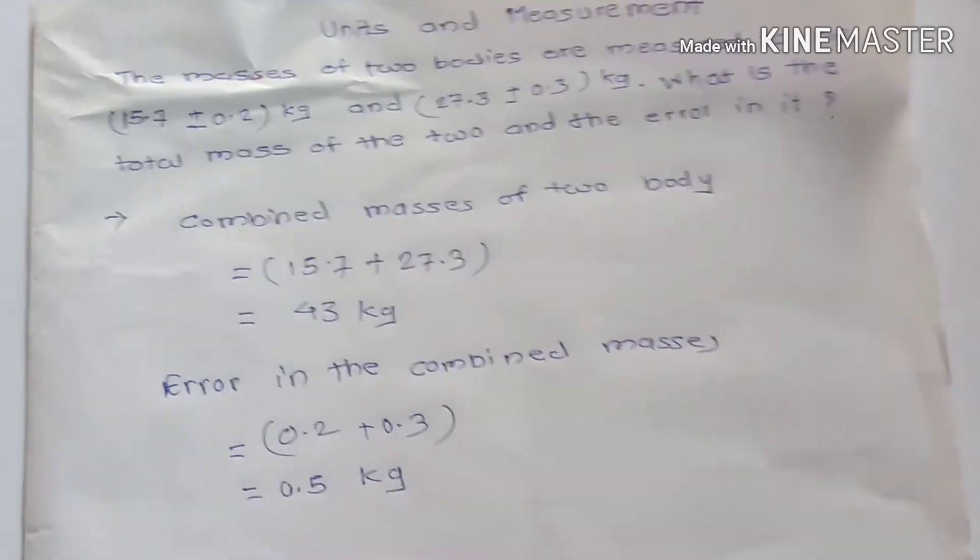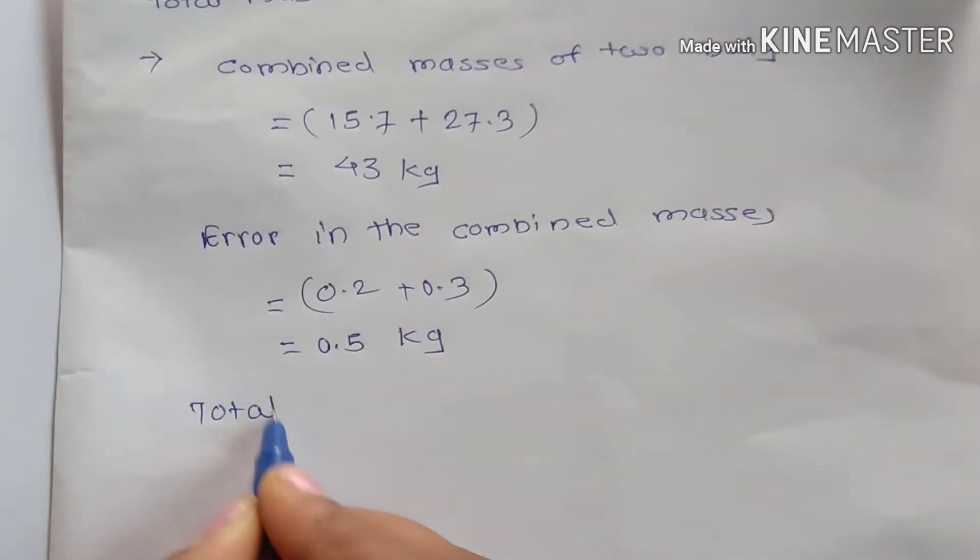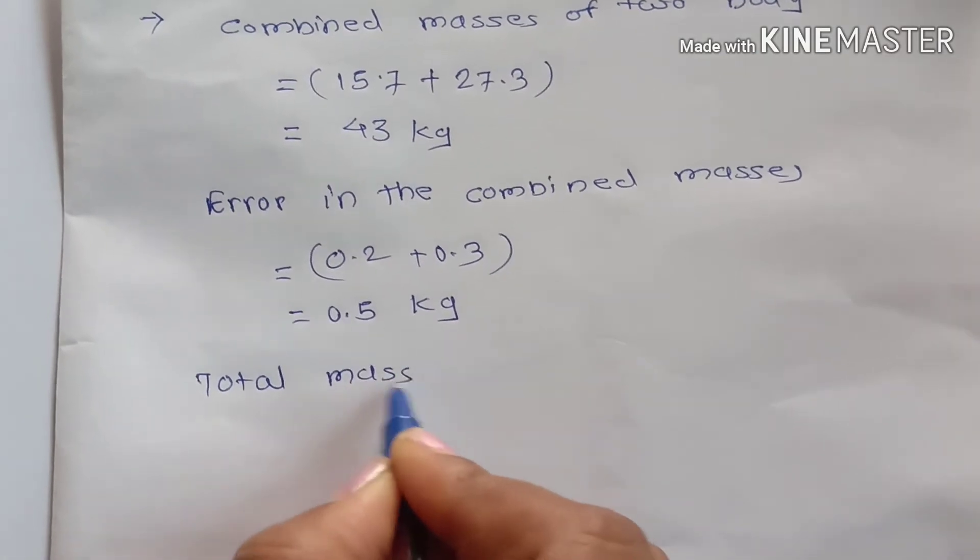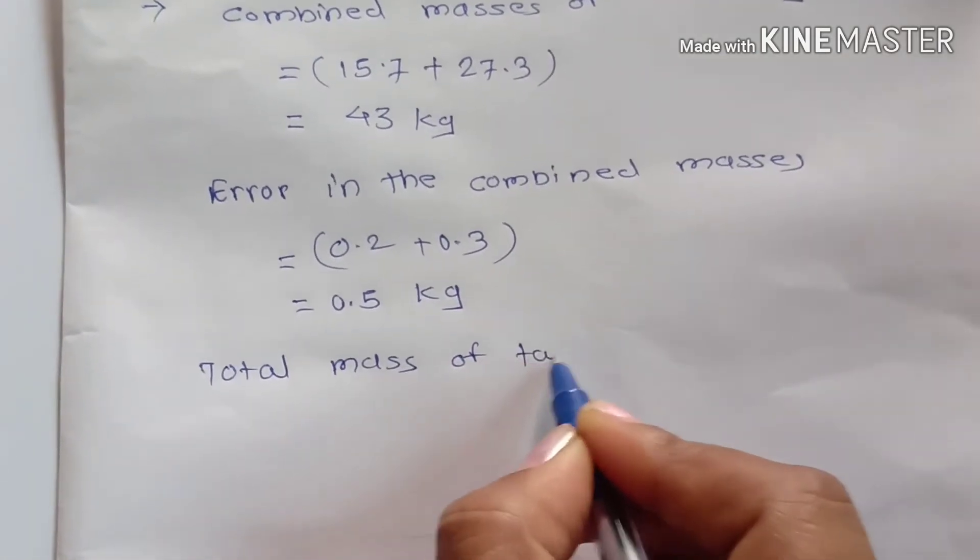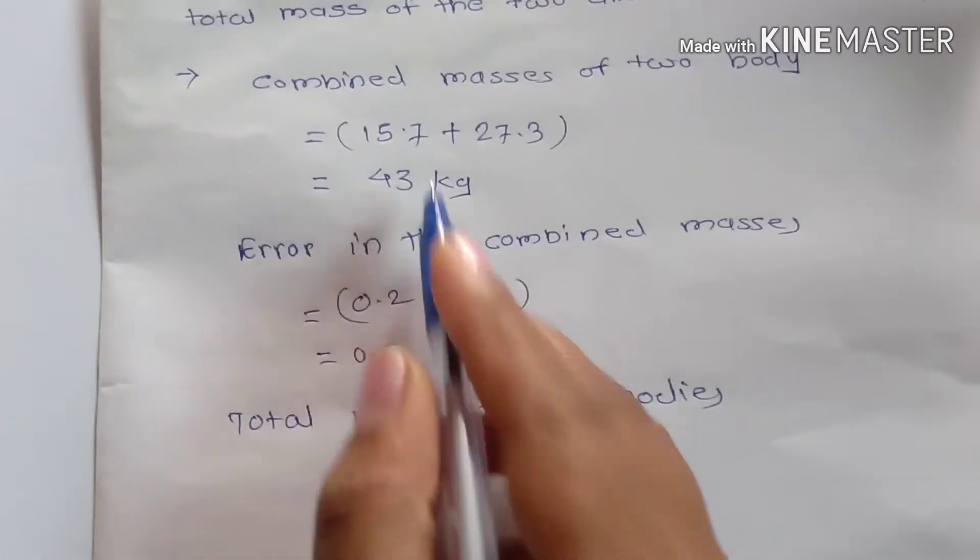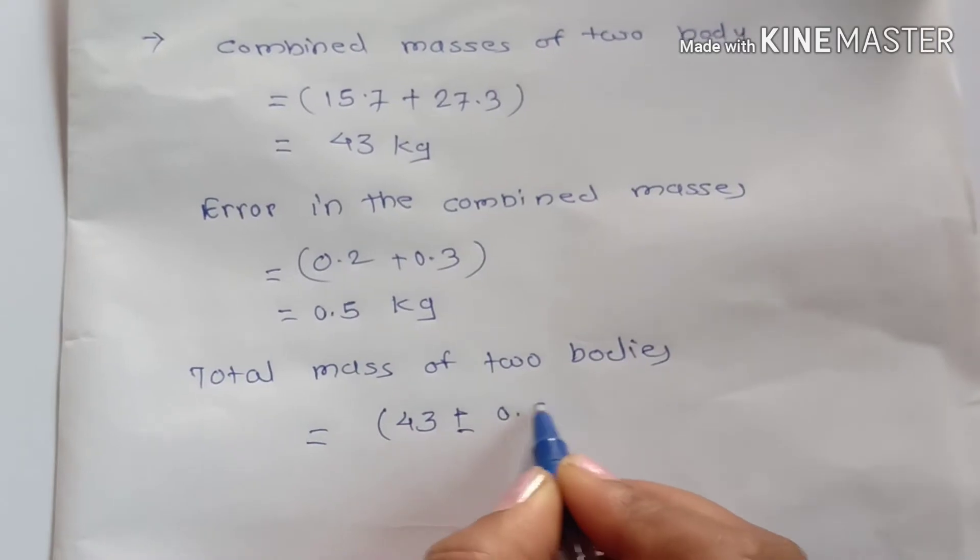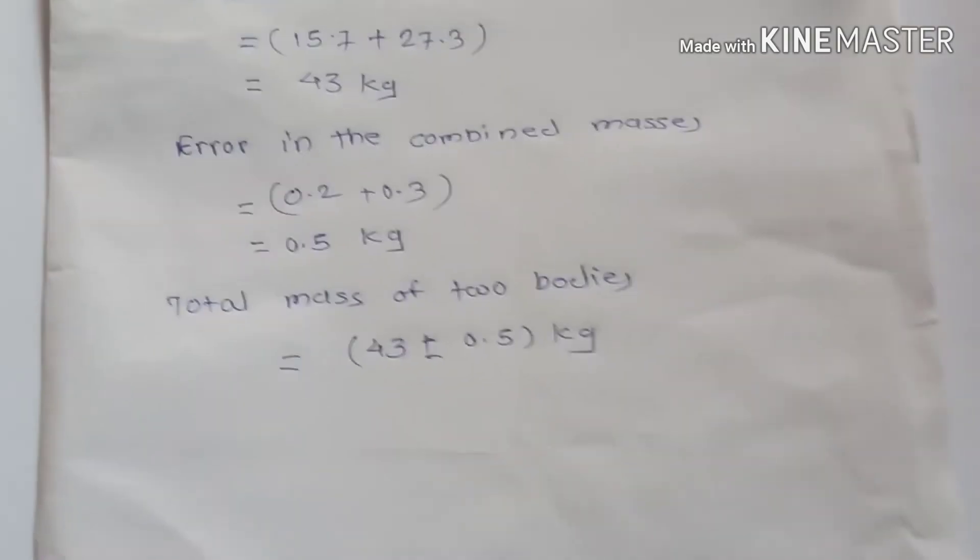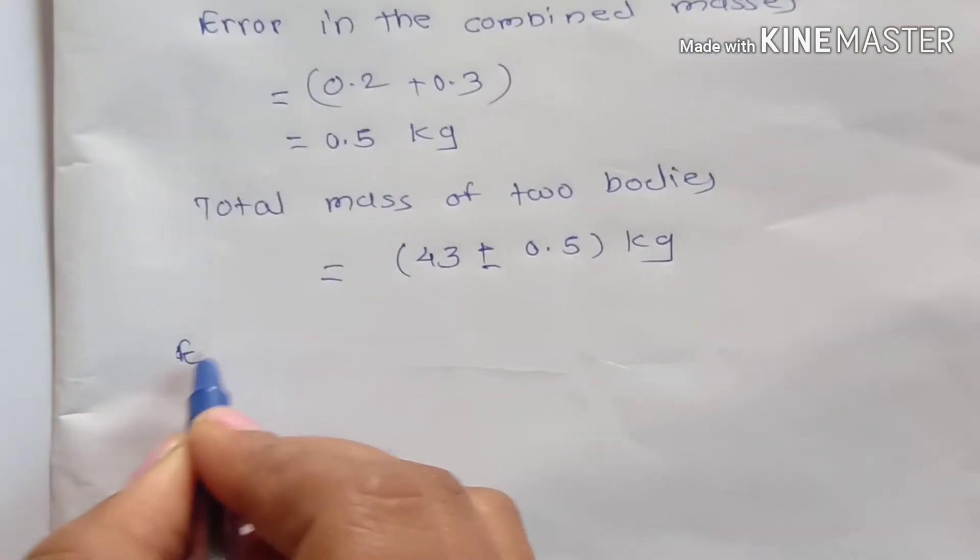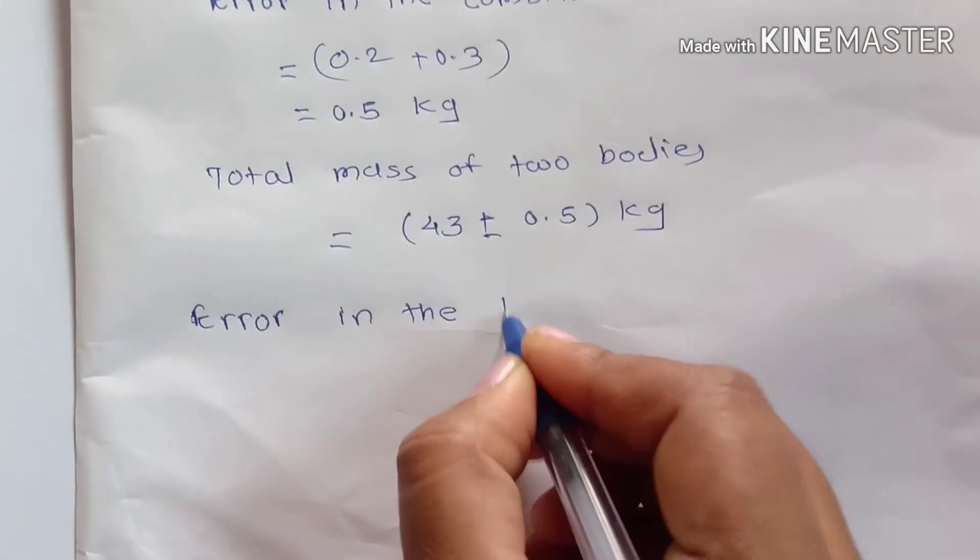Now we have to calculate the total mass of these two bodies. Total mass of the two bodies is equal to sum of these two quantities: 43 plus minus 0.5 kg. Next we have to calculate the error or uncertainty in the total mass.